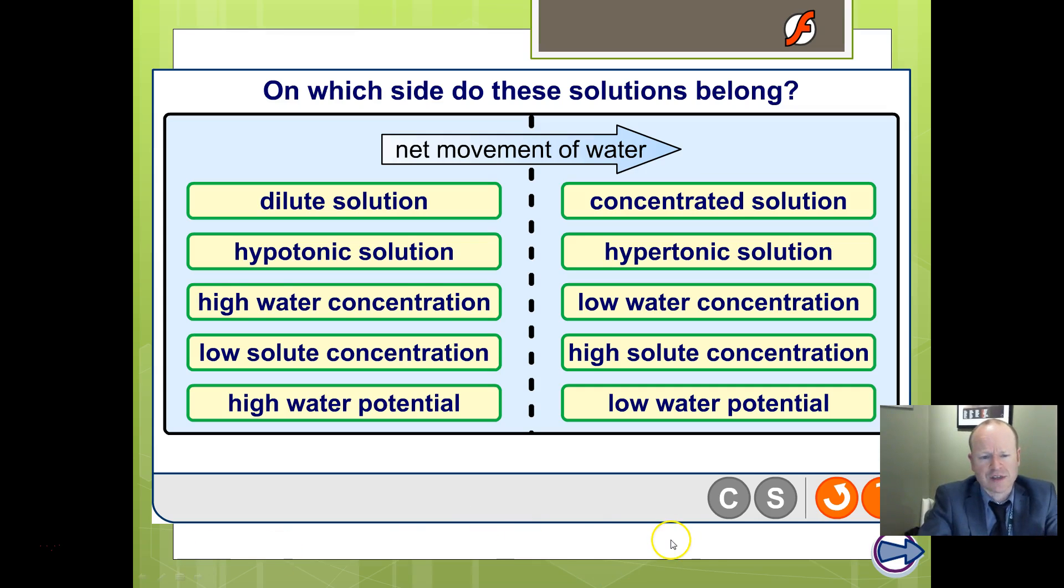Okay, our final summary slide here. Key terms in matching pairs. This is where we have net movement of water from this side to that side. So water is moving down the concentration gradient that way, from a dilute to a concentrated solution, or you could talk about from hypotonic to hypertonic. It will go from where there is a high water concentration to low water concentration, or from a low solute to a high solute concentration. Or finally, and most ideally, from a high water potential to a low water potential.